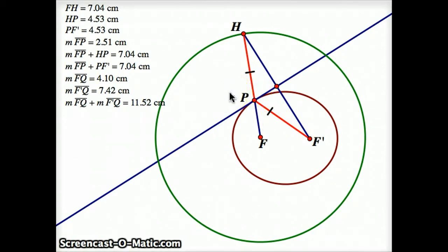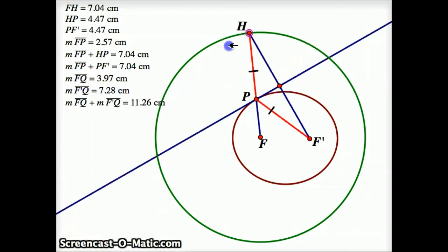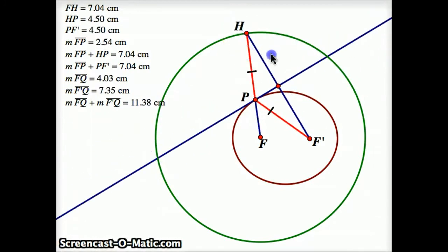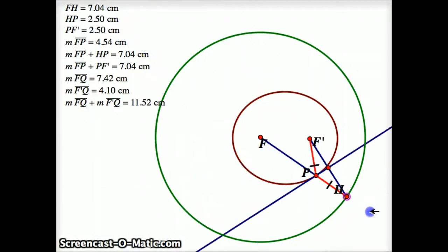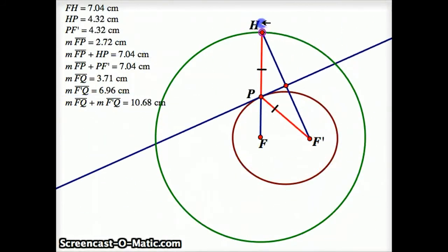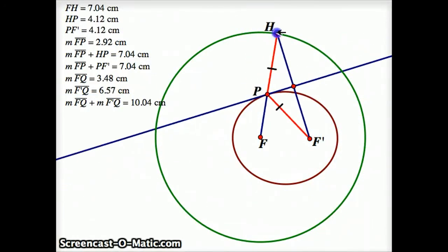But there's something more I want to say about this, something special about this line, this perpendicular bisector of HF. That line appears, at least when I move it around, to be a tangent line. And it actually, it is a tangent line, and I want to convince you of that.